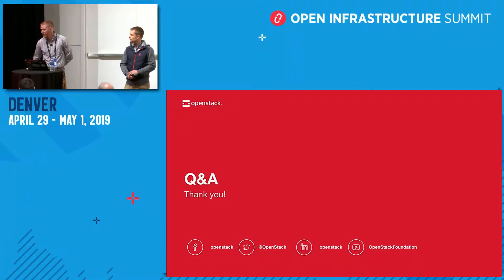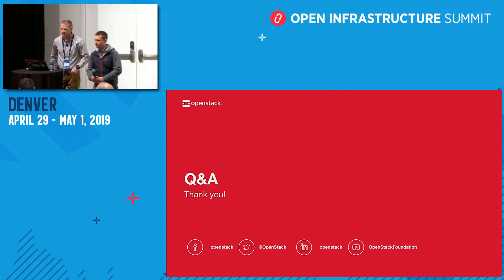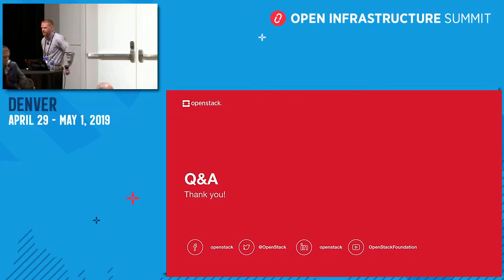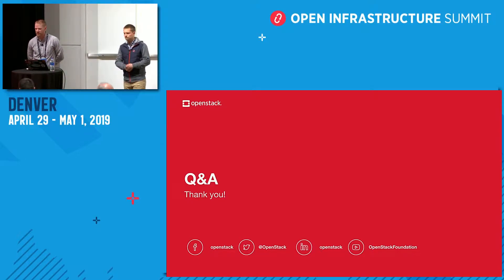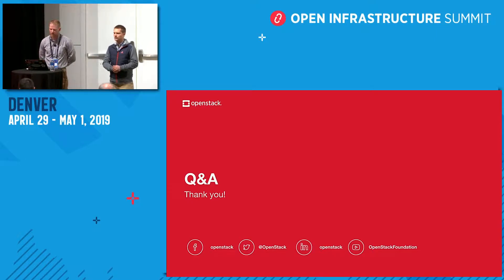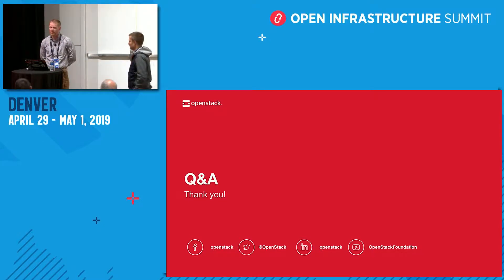Q&A: Regarding migrating to OVN on the overcloud — yes, there is a migration path with Triple O. There is a migration tool that will migrate your networks, and if there are changes to the NIC config templates there will be a migration path for those as well.